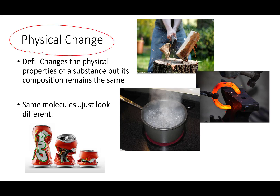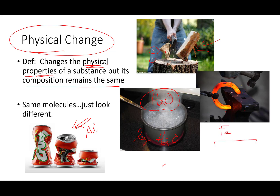A physical change means we change the physical properties, but the composition remains the same. For example: if you chop firewood, it's still firewood, just smaller pieces. You crush a pop can — it's still made out of aluminum, just changed shape. You boil water and it becomes steam, but the molecules are still water. You take an iron horseshoe — whether it's a flat bar or curved shape, it's still iron. You change what it physically looks like, but the chemical composition stays the same.